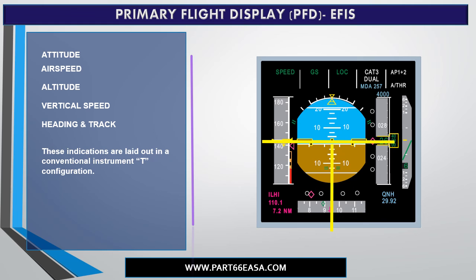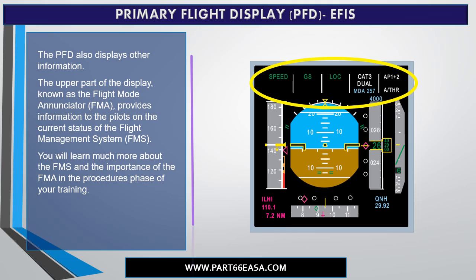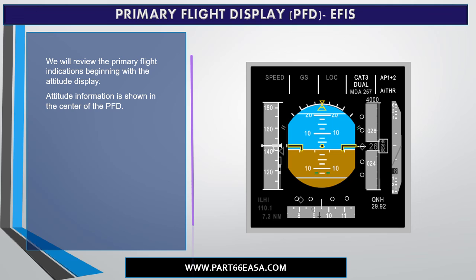These indications are laid out in a conventional instrument T configuration. The PFD also displays other information. The upper part of the display, known as the Flight Mode Enunciator, provides information to the pilots on the current status of the FMS. You will learn much more about the FMS and the importance of the FMA in the procedures phase of your training. We will review the primary flight indications, beginning with the attitude display.